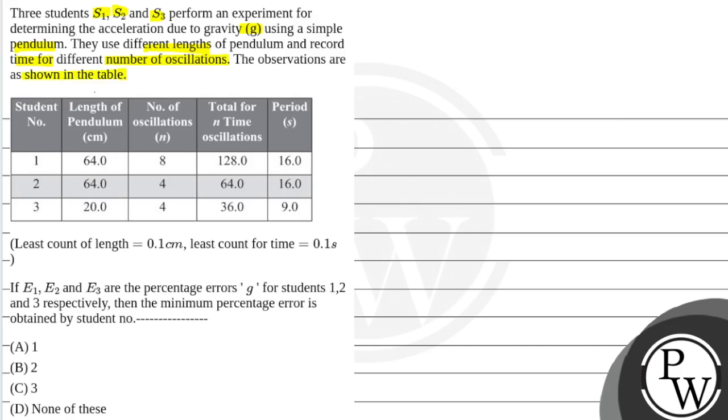So here, length of the pendulum and total time of oscillation data is given. We have least count given of the length that is 0.1 cm and least count of the time is 0.1 second.